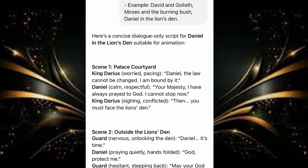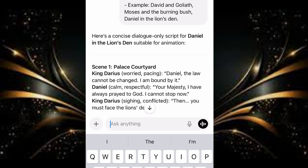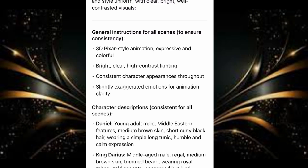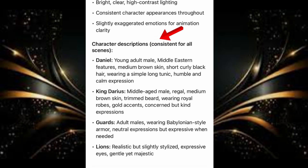We are going to do the next step, which is to generate our images. We'll tell ChatGPT to help us write prompts to generate images for each scene, making sure characters are consistent and in 3D Pixar style, clear, bright, and well contrasted. The response from ChatGPT gives us general instructions for all scenes for consistency: 3D Pixar style, expressive and colorful, bright, clear, high contrast lighting, consistent character appearances throughout, and slightly exaggerated emotions for animation clarity. I want you to pay attention to this part — the character descriptions consistent for all the scenes. We have Daniel with his description, we have the king with his description, and we also have the guards.